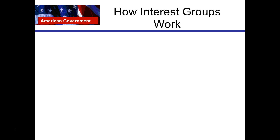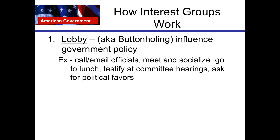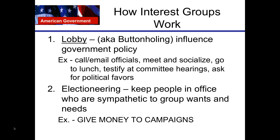Let's look at how interest groups work. We've talked about how they lobby, also known as button-holing — influencing government policy. They'll call and email public officials, meet and socialize with them, go to lunch with them, testify at committee hearings, and ask for political favors. Another thing they'll do is electioneer — seeking to keep in office people who are sympathetic to the group's wants and needs. They'll also give money to campaigns and encourage people to give money to politicians who support their group.